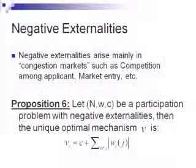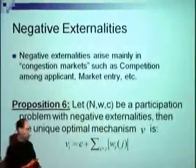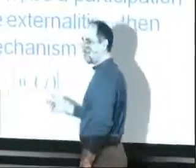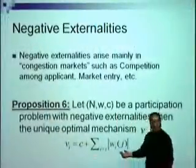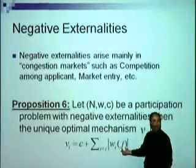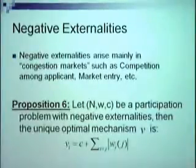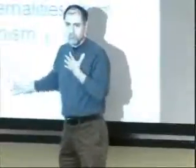With negative externalities, the picture completely changes and the optimal mechanism is much simpler. Basically, what you have to pay each agent is C plus the sum of absolute values of all negative externalities — because you must reimburse agents for the disutility caused by getting all these people together. If you pay them epsilon less, there simply won't be an equilibrium in which all attend. Graphs play no role here.